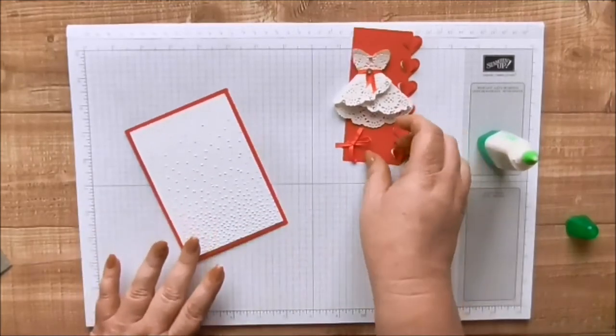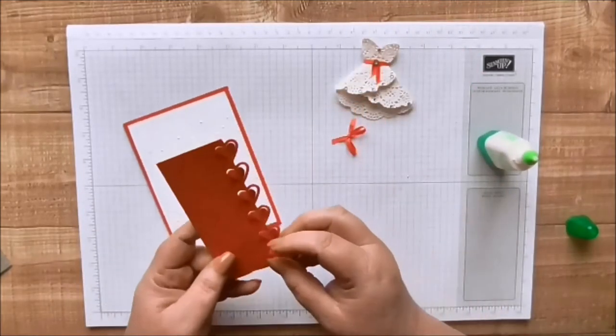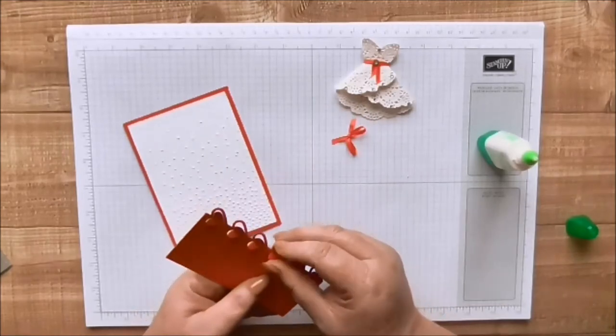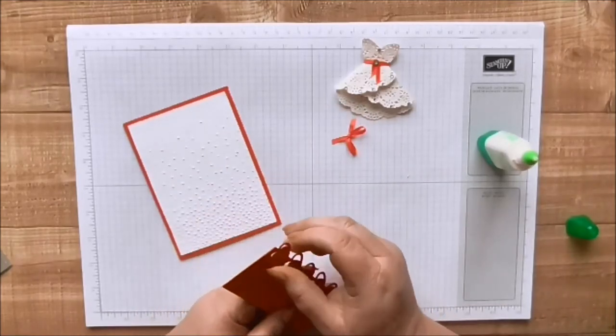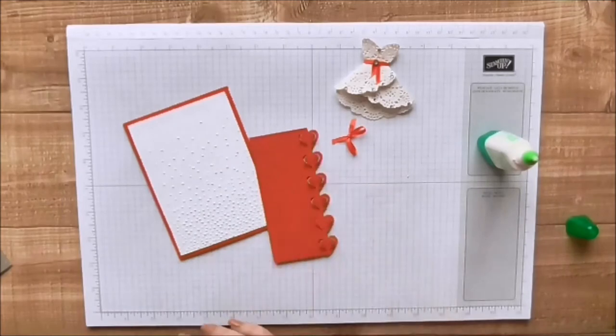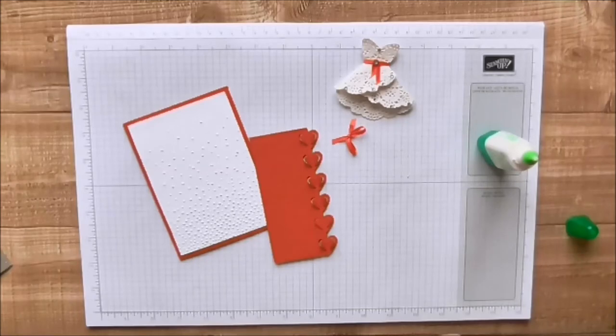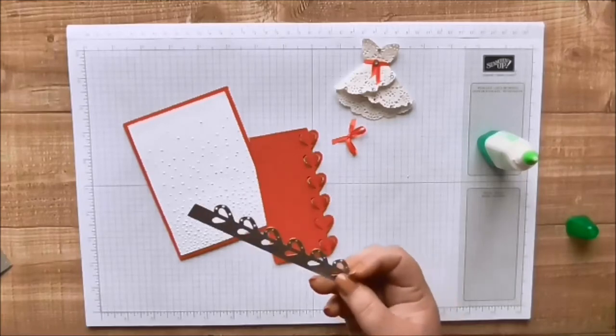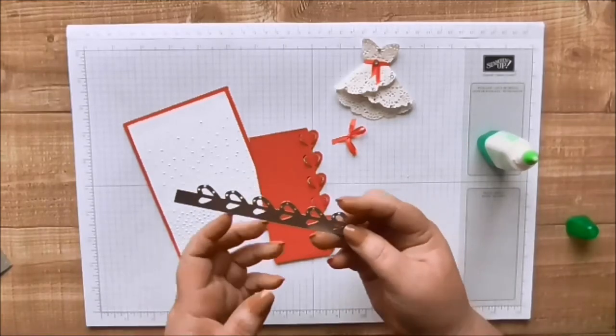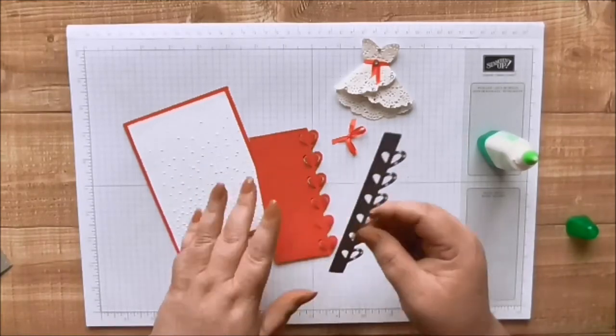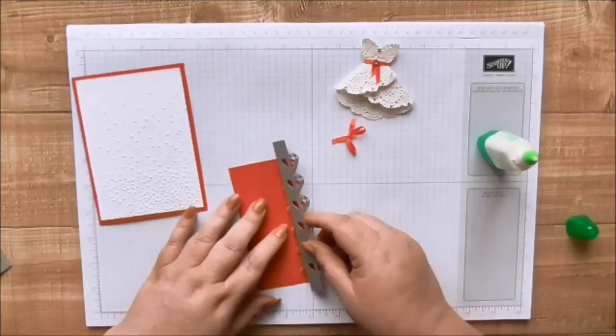I'm going to use it as a layer on my card. And then what I did was I've got another piece of Calypso Coral and I used this gorgeous edging die which comes with the Love Notes Framelits which are retired. I just want to show you.